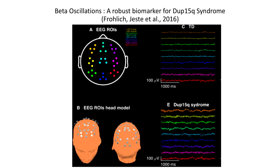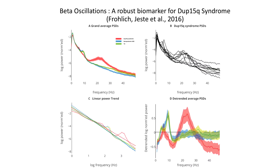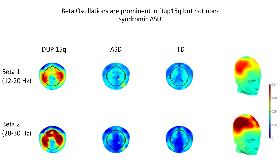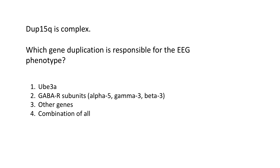Shefali's lab has done really great work with high-density EEG, and she discovered that there is a very robust increase in beta oscillations in DUP15Q. If you look at the EEGs in these kids with DUP15Q, the beta oscillation power is much, much higher. If you quantify this, you can clearly see that the power between 12 and 30 Hz is greatly increased in DUP15Q, and this was reliable and robust, seen in almost all the kids. The increase in beta oscillations was mainly frontotemporal, but you could see it everywhere pretty much.